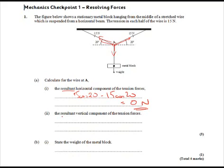Okay, the resultant vertical component of the tension forces. So now we're not looking for zero anymore because the two tension forces are both going upwards. So now we've got 15 sine 20, and we've got two lots of that because they're both going upwards. So two lots of 15 sine 20, stick that in your calculator, and you'll find that comes to 10.3 newtons.